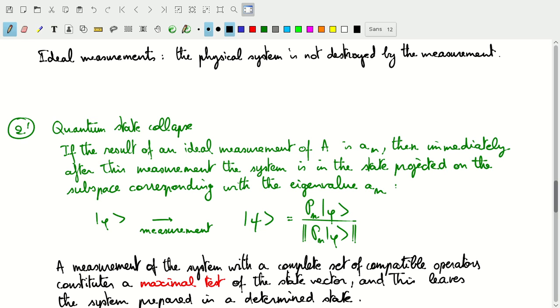We have to have ideal measurements, and if we apply a complete set of compatible operators, which remember allows us to specify a basis of the full Hilbert space based on just the eigenvalues, then if we are able to make a measurement of the system with this complete set of compatible operators, that constitutes a maximal test of the state vector.